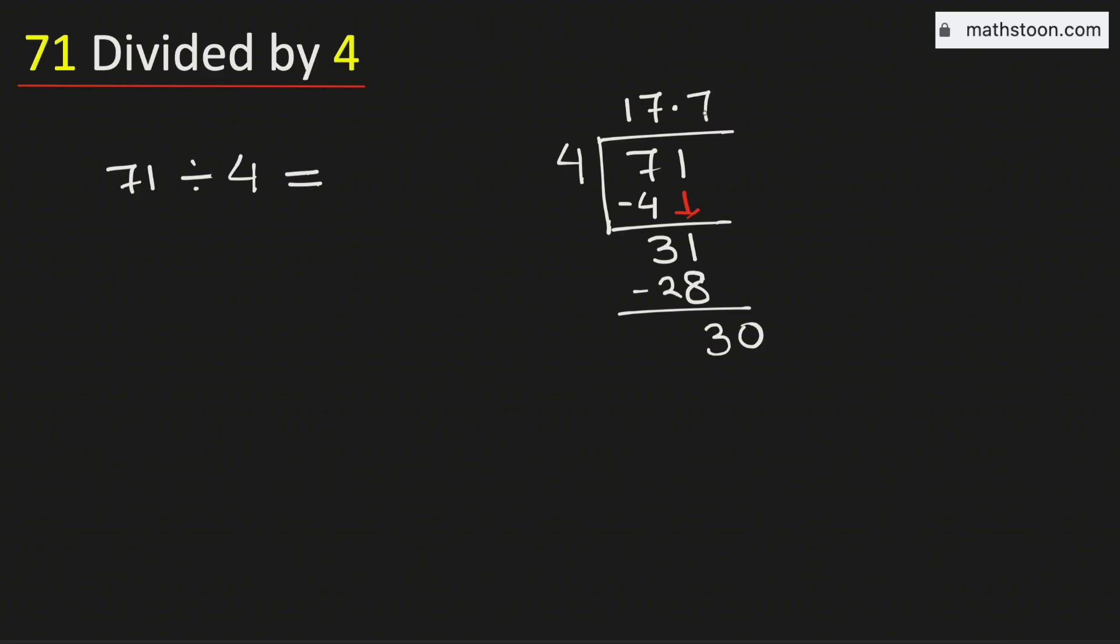Again 4 times 7 is 28. Subtract, we get 2. Again 2 is less than 4, so we will again borrow 1 zero.